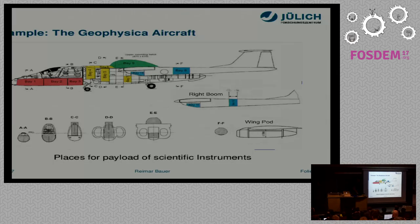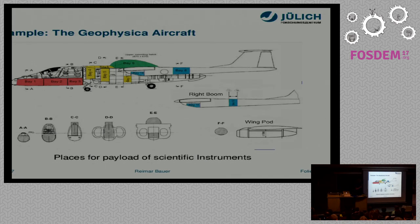This image shows how different groups try to add their instruments to the aircraft. There are several bays, and you can also have a wing pod for special instruments — for example, an instrument that is always on the right side of the aircraft and can only measure when you make a right turn, because it looks in a different direction and should not look into the sun. So there are some circumstances you have to care for.